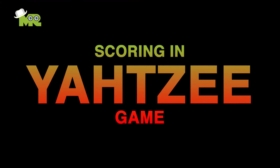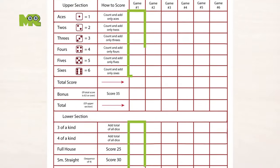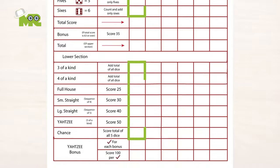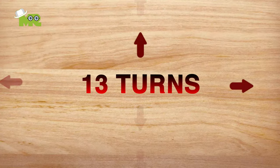Scoring in the Yahtzee game. First, on the scorecard, there are 13 boxes to score. Second, every player is given a total of 13 turns.